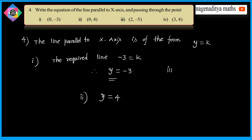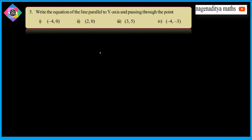The third question: the line is parallel to x-axis, so y is equal to k form. The y-value is -5, so k is equal to -5. Therefore, the required line is y is equal to -5. We can do these problems — there is no confusion. The line is parallel to x-axis, the form is y is equal to k.